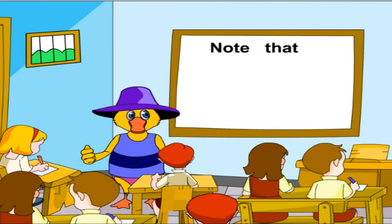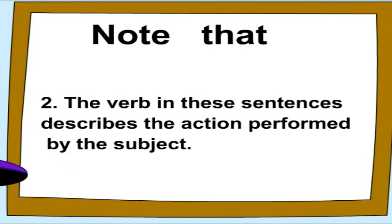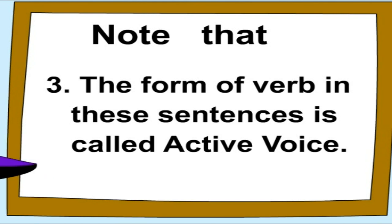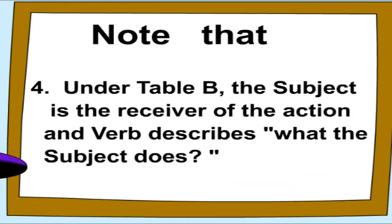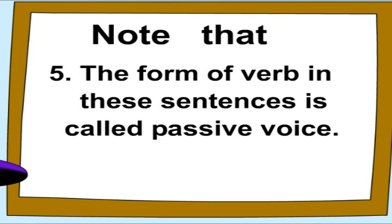Note that: one, in the first sentence of each pair, the subject is the doer of the action. Two, the verb in these sentences describes the action performed by the subject. Three, the form of the verb in these sentences is called active voice. Four, in table B, the subject is the receiver of the action and the verb describes what is done to the subject. Five, the form of verb in these sentences is called passive voice.